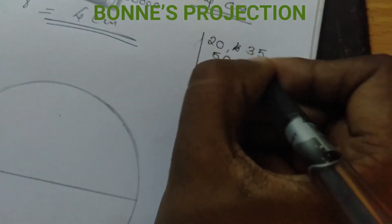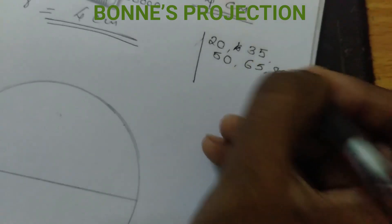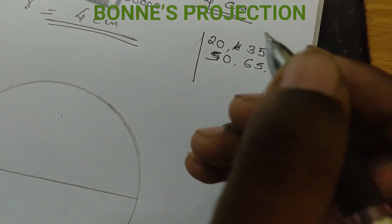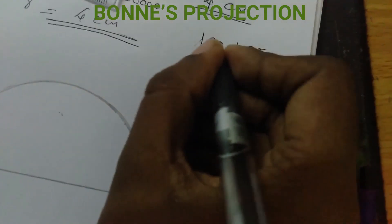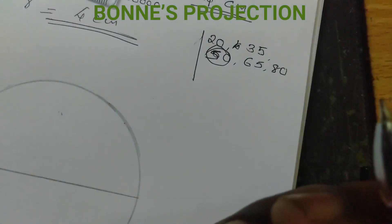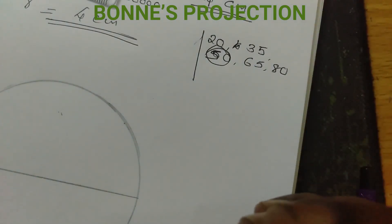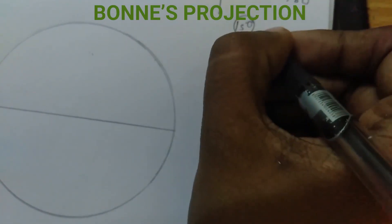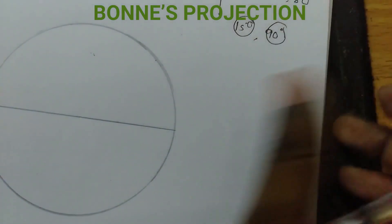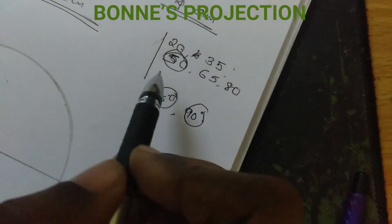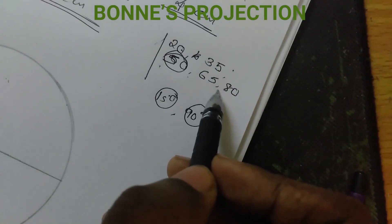The latitude values are 65 and 80. If we have a standard parallel, this is the central parallel value — it is 50. The main standard parallel. If we mark this, the projection interval is 15 degrees. As we usually do it, it is a 90 degree mark. The model values are 20, 35, 50, 65, 80 — this is how we mark them.